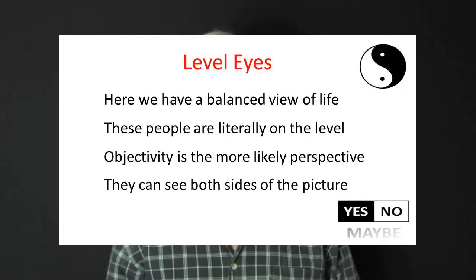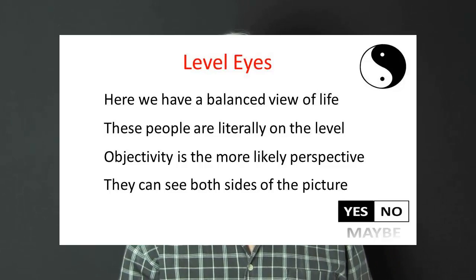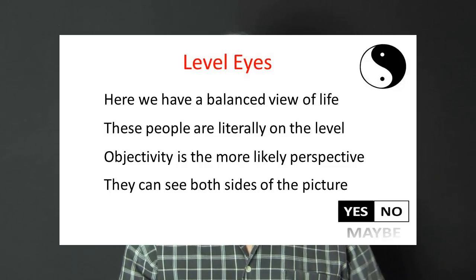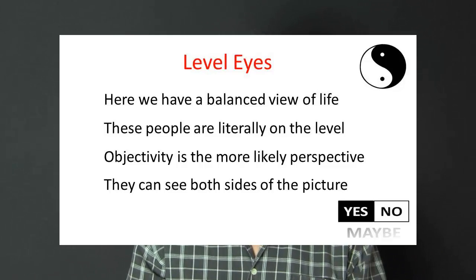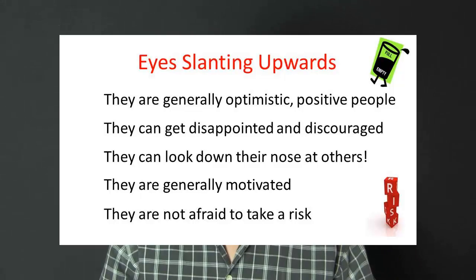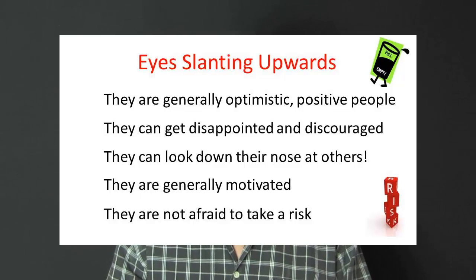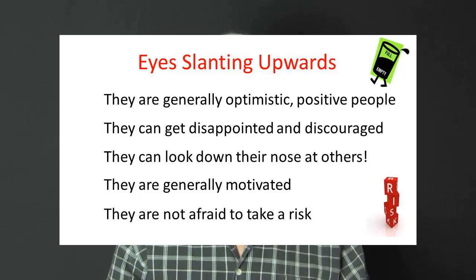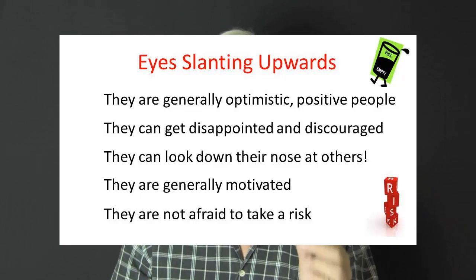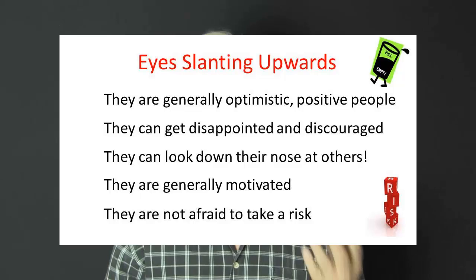Finally, we'll look at the level of the eyes — eyes that are horizontally level, eyes that slant upwards, and eyes that slant downwards. Eyes that are horizontally level reflect a balanced view of life. These people are on the level with a balanced perception of what life is all about. Objectivity is the more likely perspective that they hold, and they can see both sides of the picture. Eyes that slant upwards: these people are generally optimistic, positive people. They anticipate things will turn out for the best. They can get disappointed and discouraged when things do not go their way, but the disappointment is often just a passing mood. They can look down their nose at others. They are motivated and they are risk takers.